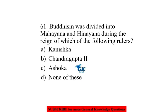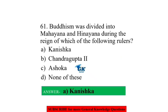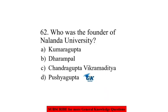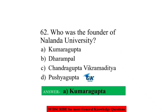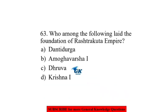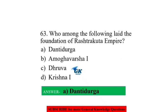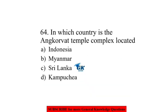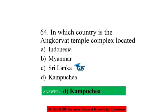Buddhism was divided into Mahayana and Hinayana during the reign of which ruler? Kanishka. Who was the founder of Nalanda University? Kumara Gupta. Who among the following laid the foundation of the Rashtrakuta Empire? Dantidurga. In which country is the Angkor Wat temple complex located? Kampuchea (Cambodia).